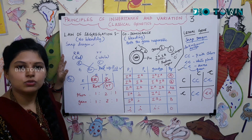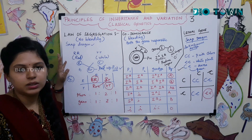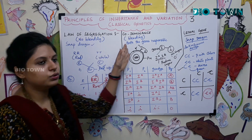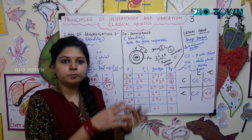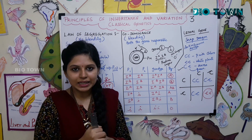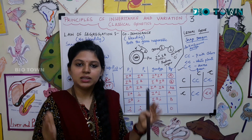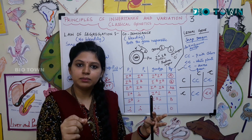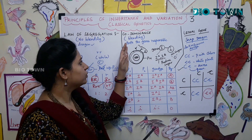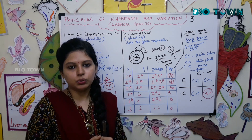That is the speciality of this law of segregation — there is no blending; a distinct character is observed. Next we move on to co-dominance, which is the totally opposite of the law of segregation. Co-dominance is where both genes play a very important role in determining the character of an individual. A classic example is human blood groups.